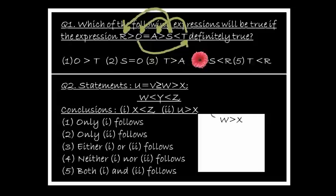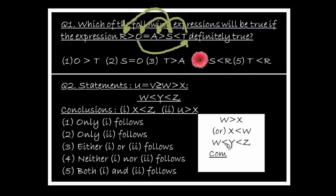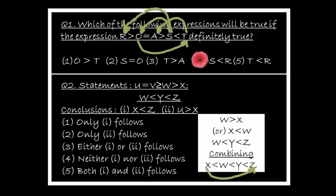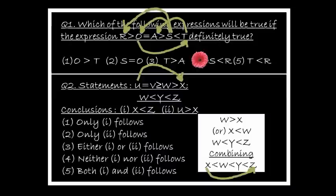Combined statement: x less than w less than y less than z. Conclusion one is x less than z — draw a forward arrow from x to z. Highest priority symbol is less than — conclusion one is right. Conclusion two: v greater than x — draw an arrow from v to x using statement one. Highest priority symbol between v and x is greater than. So v greater than x is also correct. Answer: both conclusions one and two follow.